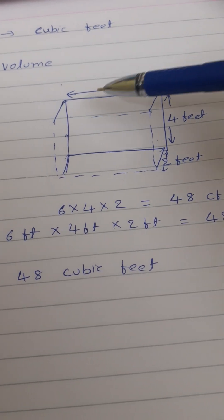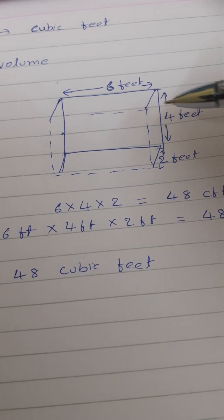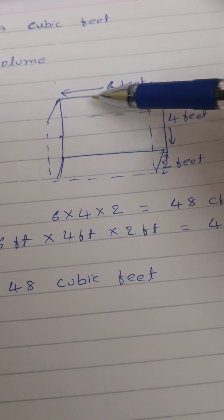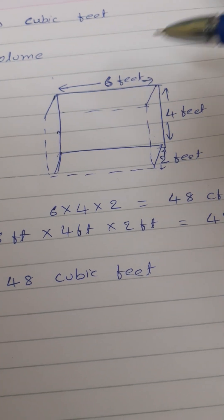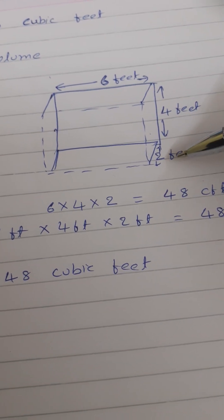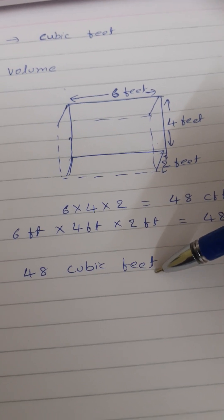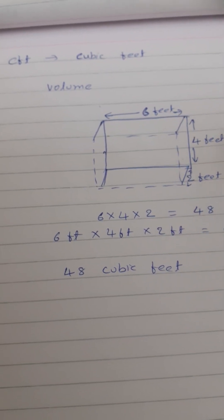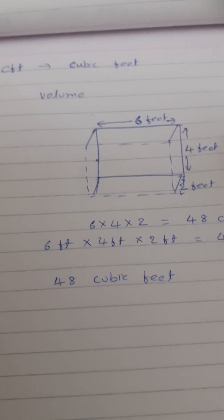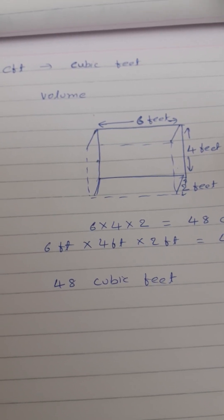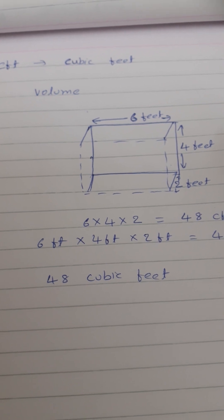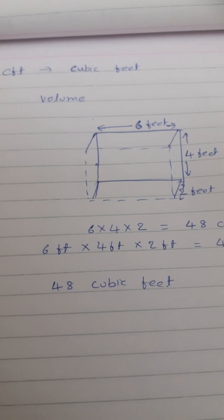In this example, a regular Tata S vehicle which carries sand or 20mm metal — to calculate the volume, we need the length of the loading part (6 feet), the width (4 feet), and the height where sand is stored (2 feet). So 6 feet into 4 feet into 2 feet gives us 48 cubic feet. I hope you understand the difference between running feet, square feet, and cubic feet. If you have any doubts, please comment below. In the coming videos, we will learn more about civil engineering calculations and floor plans. Please subscribe and like the channel. Thank you so much.